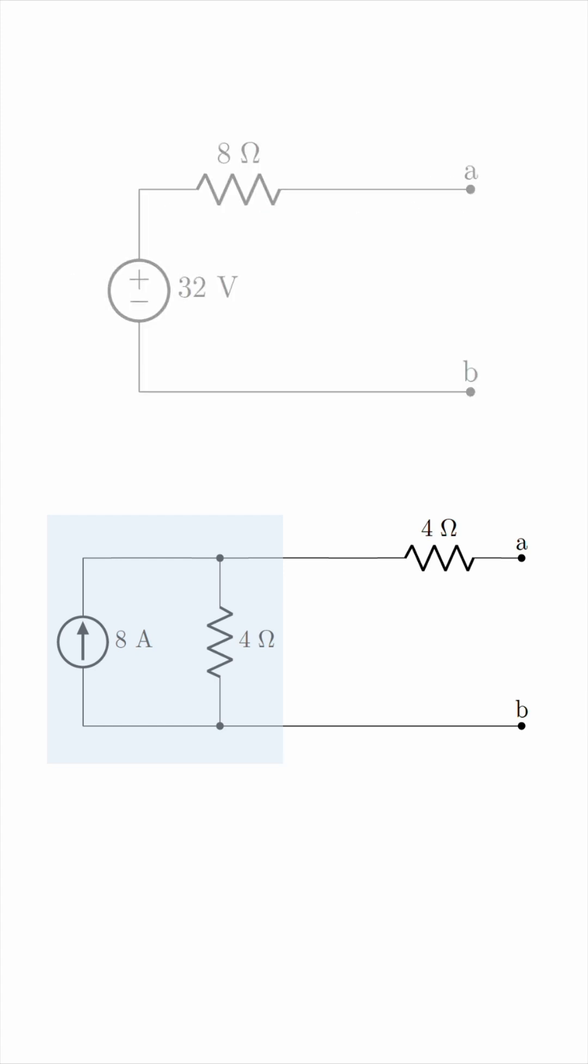So, we end up with a voltage source of 32 volts in series with this 4 Ohm and the other 4 Ohm resistor, giving us a total of 8 Ohms in series like this.